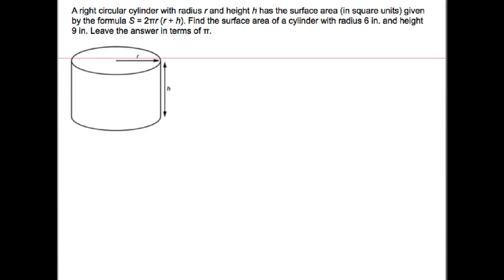A right circular cylinder with a radius of r and a height of h has a surface area in square units given by s equals 2 pi r times the quantity r plus h.